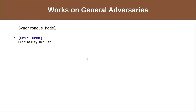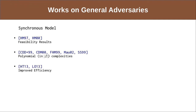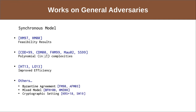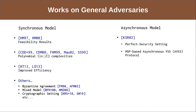Most previous work on general adversaries considered the synchronous communication model. The work of Hirt and Maurer initiated the study of general adversaries and presented feasibility results for MPC. Later works presented protocols with polynomial complexities in various settings, and more recent works have focused on further improving communication and computation complexities. In the asynchronous communication model, the only other work is that of Kumar et al., who also considered the setting of perfect security, presenting an asynchronous verifiable secret sharing scheme based on monotone span programs and an asynchronous MPC protocol. However, we show that their asynchronous MPC protocol is flawed.